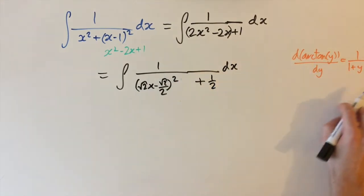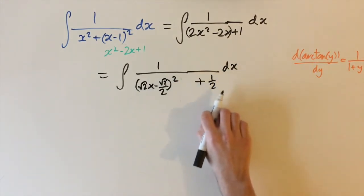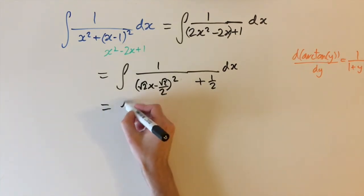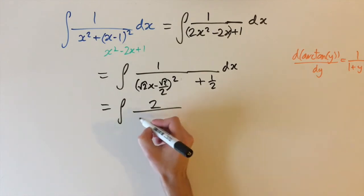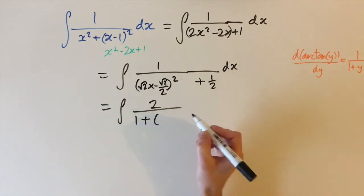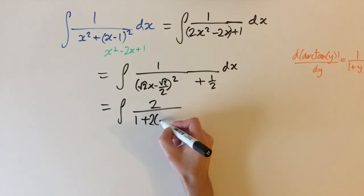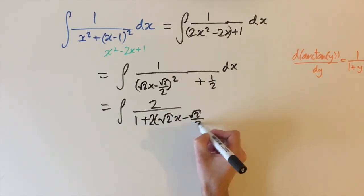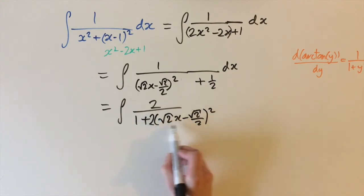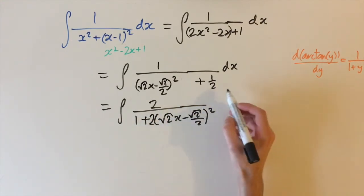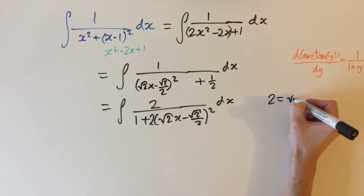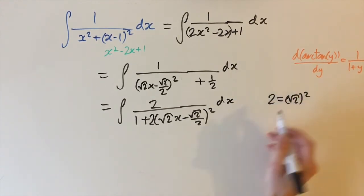Now if we want to get into this form, we should scale it by 2, so we have a plus 1. I'm just going to multiply numerator and denominator by 2, so we have 2 over 1 plus, we have 2 here in front times root 2x minus root 2 over 2 squared. But we want to get the 2 inside the bracket, so we have a square term. Just remember that 2 is equal to square root of 2 squared, so we can bring square root of 2 inside this bracket.